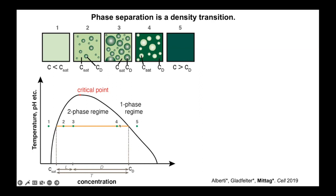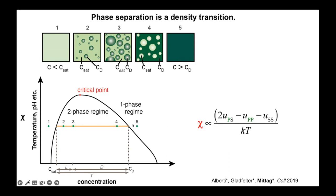If we increase the total protein concentration, we'll just get more dense phase — larger or more droplets. At very high protein concentration, we'll have more dense phase than dilute phase, so it will look like dilute phase droplets inside a dense phase. The chi parameter describes how strongly something phase separates — it's really about the balance of protein-protein, protein-solvent, and solvent-solvent interactions. If protein-protein interactions are very favorable, we get phase separation. This is a mean-field parameter reflecting whether protein chains like to interact with each other more than with the solvent.